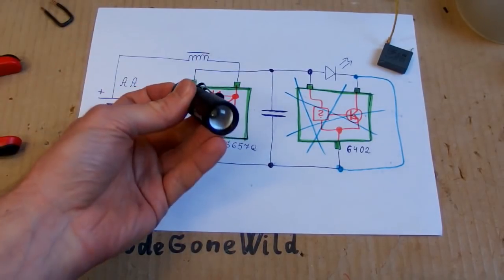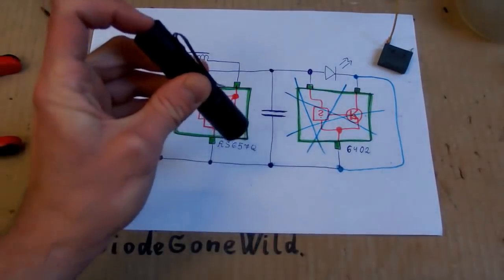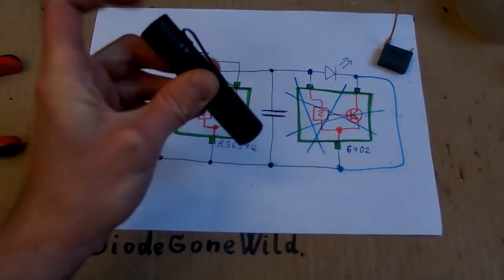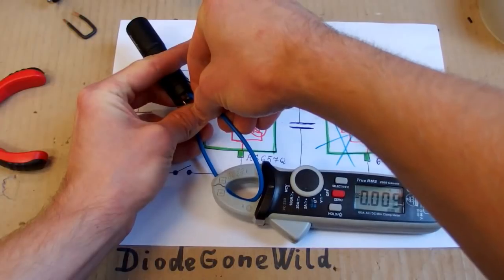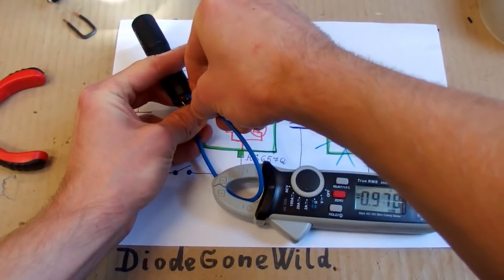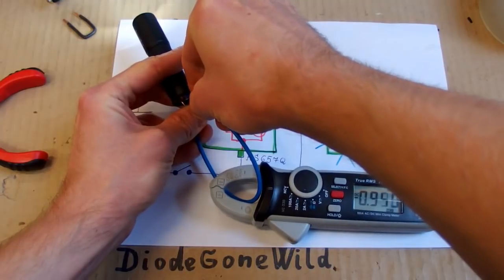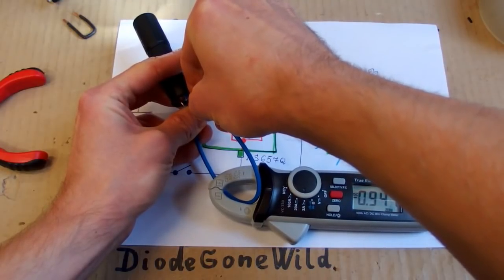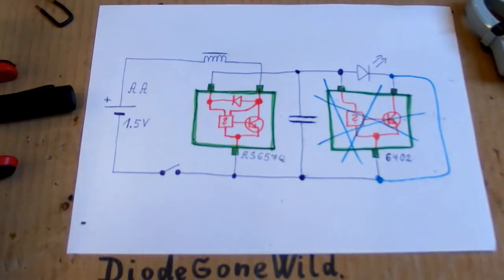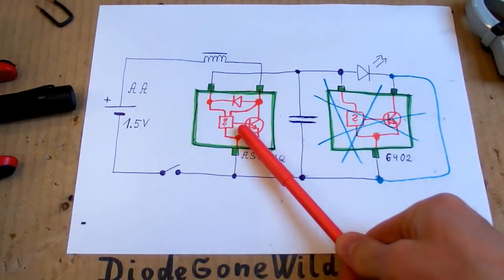So now it's reassembled and it works. Now let's measure the current. The current is 0.95 amps. So it's the same as before. So it seems that the current regulation happens in this chip.